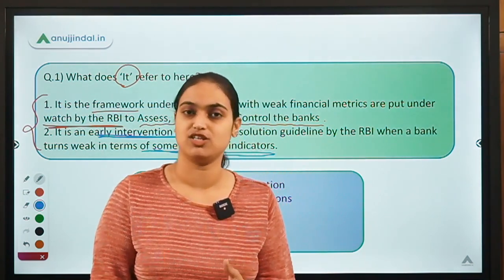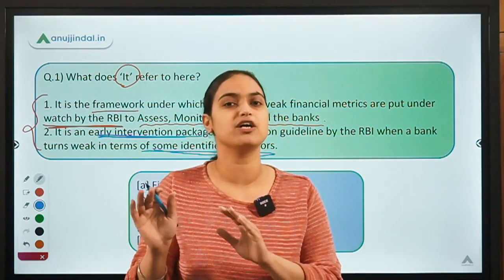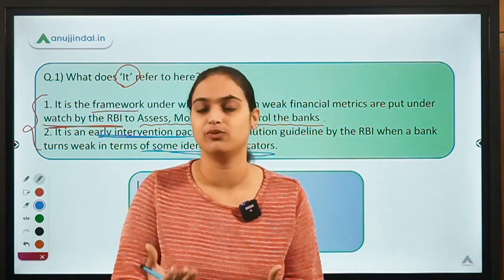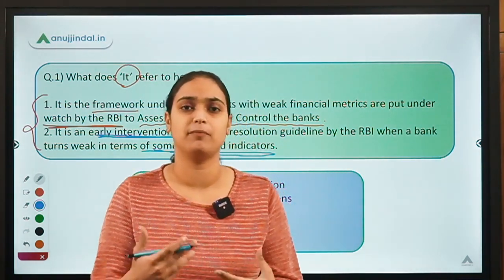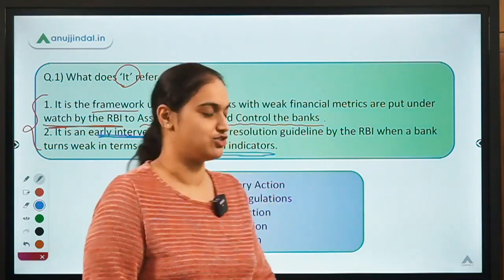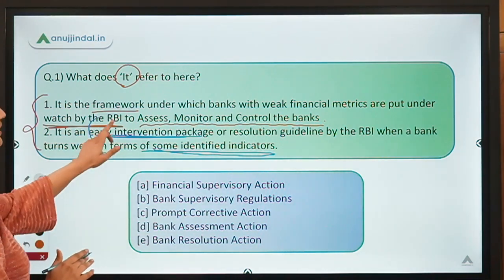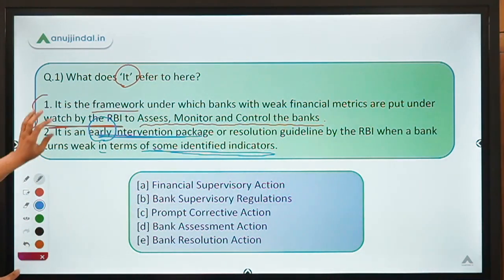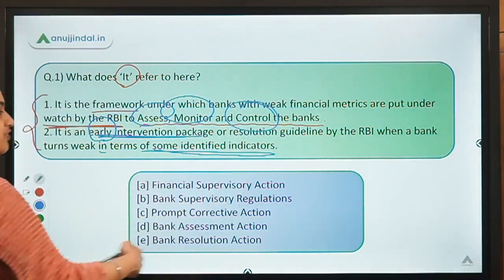So what is Prompt Corrective Action? Beforehand, we are taking actions and having supervision on banks to keep a check on them, so that whenever their health begins to deteriorate, action can be taken early. Instead of waiting for banks to deteriorate to the point of a bank run or a major crisis, we take intervention actions beforehand. This is the framework to assess, monitor the performance of banks and control their proper functioning.